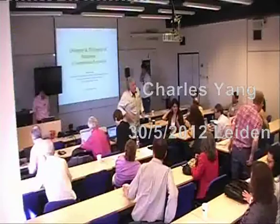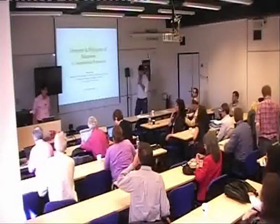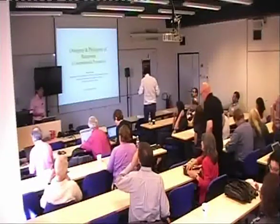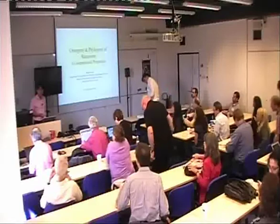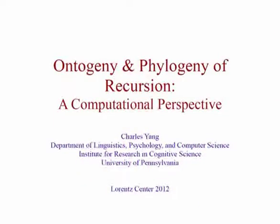The final speaker today is Charles Young. The title of his talk is Ontogeny and Phylogeny of Recursion: A Computational Perspective. Thank you very much for having me here. I'm a computer scientist — I deal with numbers. This is a computational interpretation of what has been said about child language and human language, trying to infer something hopefully interesting about the origin of language and how various pieces of core knowledge are put together.